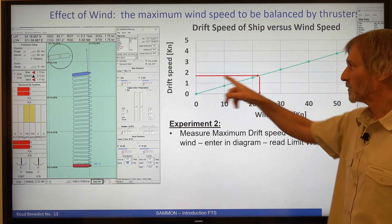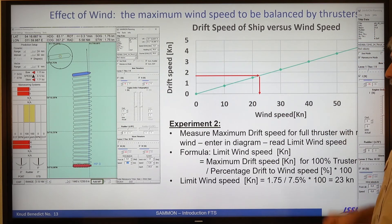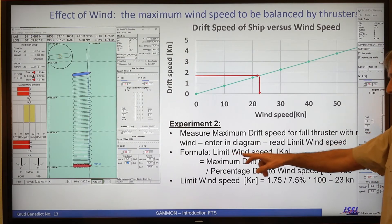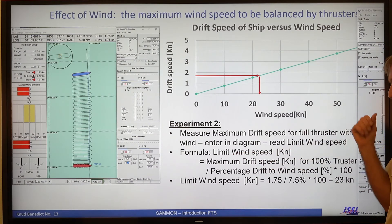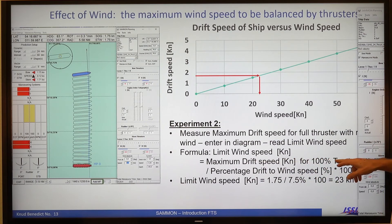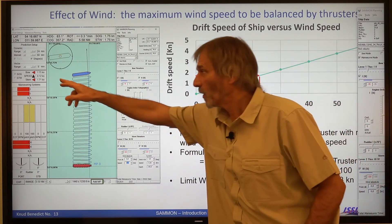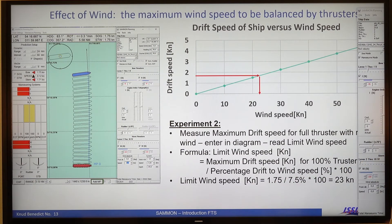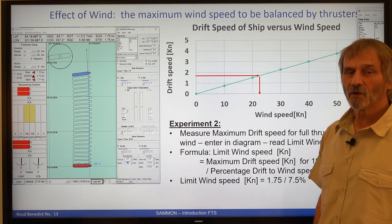We can use this diagram here or we could also use a formula. So to calculate the wind speed limit, we need the maximum drift speed for 100% thrusters. This is our 1.75 knots. Multiplied with the percentage of wind to drift speed times 100. This is 23 knots.